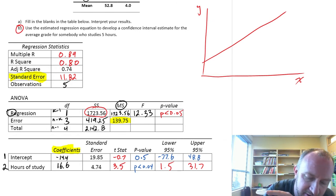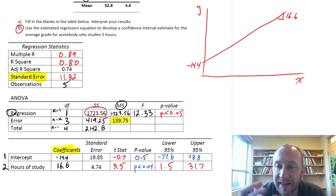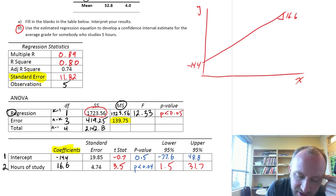Our estimated regression equation had an intercept of negative 14.4 and a slope of 16.6. Now, as we saw in our calculations that we did earlier,